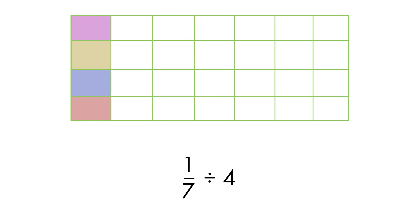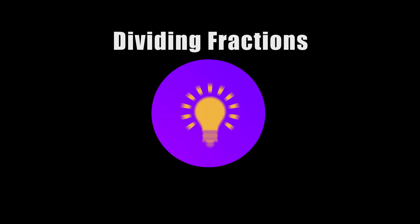If one-seventh is divided into four equal parts, each of the four parts is one-twenty-eighth. And that's how you divide fractions by whole numbers. See you next time!